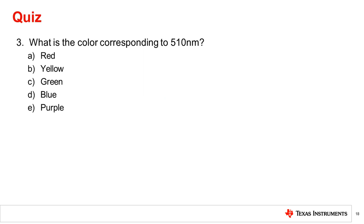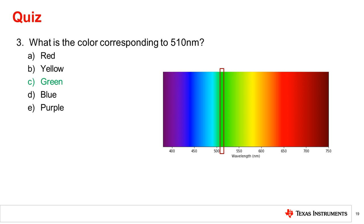Question 3: What is the color corresponding to 510 nanometers? Recalling the visible spectrum, we can see that 510 nanometers corresponds to the color green as seen by the human eye.